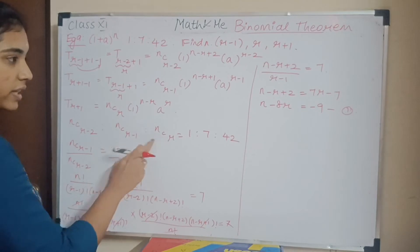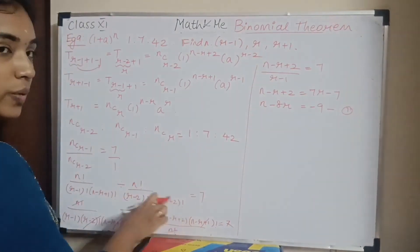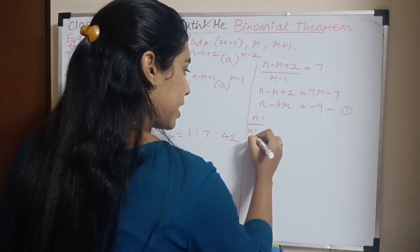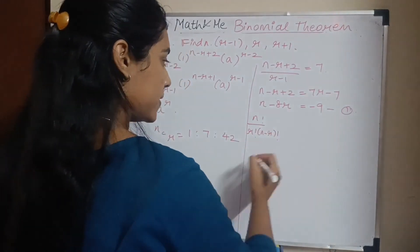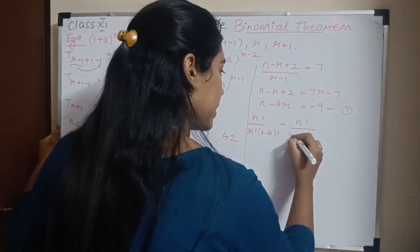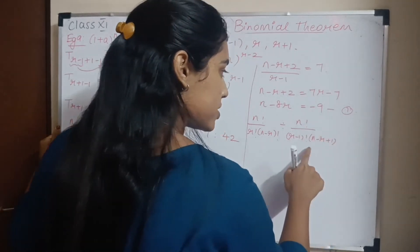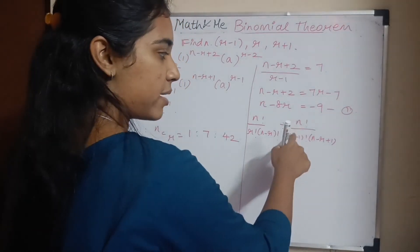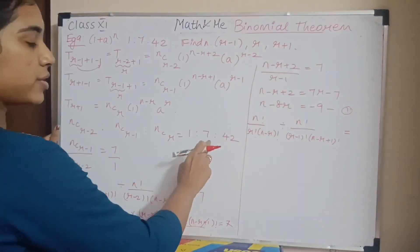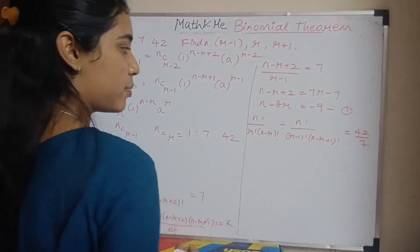For the second ratio, nC(r) / nC(r-1) = 42/7 = 6. Expanding: n! / [r! · (n-r)!] divided by n! / [(r-1)! · (n-r+1)!] equals 6. r! becomes r·(r-1)! and (n-r+1)! becomes (n-r+1)(n-r)!.